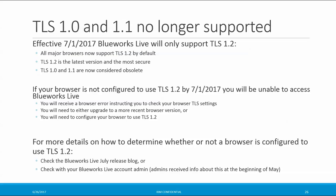This isn't news — we emailed all of our customer admins about this a couple of months ago — but I just wanted to remind everybody that TLS 1.0 and 1.1 are no longer supported. As of this release, we're only supporting version 1.2 of TLS. All major browsers now support TLS 1.2 by default. TLS 1.2 is the latest version and it's the most secure, and TLS 1.0 and 1.1 are now considered obsolete. So if your browser isn't configured to use TLS 1.2 by July 1st, you won't be able to access BlueWorks Live. You'll receive a browser error telling you to check your browser TLS settings, and you'll need to either upgrade to a more recent browser version or configure your browser to use TLS 1.2.